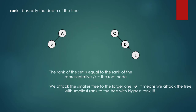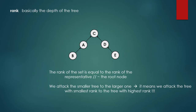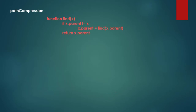For example, we have two disjoint sets: {A, B} and {C, D, E}. We merge them by attaching the tree with smaller rank to the tree with highest rank. Path compression is basically a modified find method. If the X's parent is not equal to X — meaning this is not the root — we recursively set the parent to be find(X.parent). It is a very elegant recursive method call.